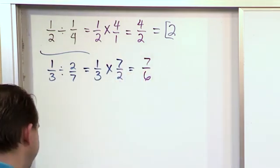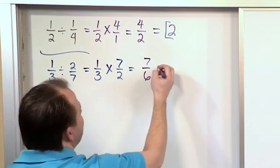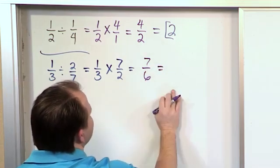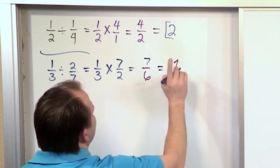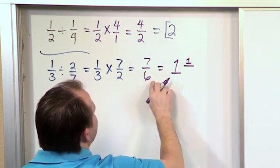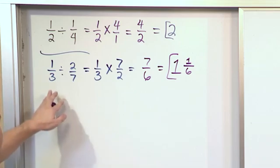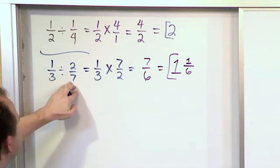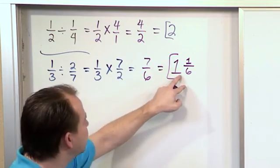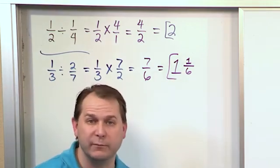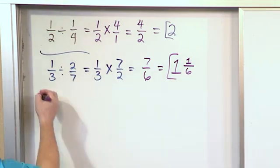Now that's the answer but that's improper. So what we want to do is divide and see how many times will 6 go into 7. That can only go one time with the remainder of one left over and we always write it over the denominator. So 1 and 1 sixth. So if we take 1 third of a pizza, how many times will 2 sevenths fit into there? Well, it'll go one whole time and a little bit more. 1 sixth more. That's how you interpret the results there.